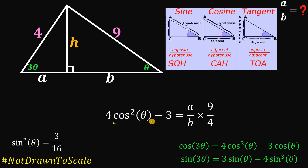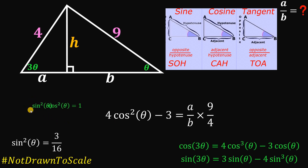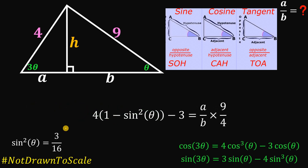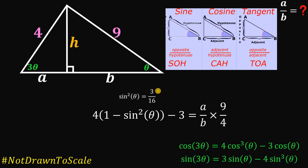To find cosine squared theta, we use the Pythagorean identity: sine squared theta plus cosine squared theta equals 1, so cosine squared theta equals 1 minus sine squared theta. Since we found sine squared theta equals 3 over 16, we substitute that in: cosine squared theta equals 1 minus 3 over 16.